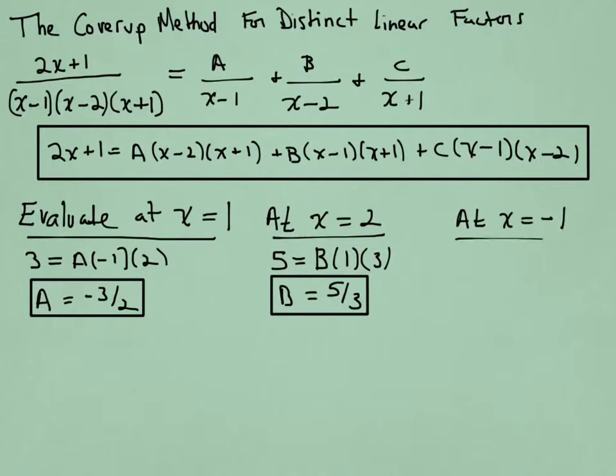To find C, I should evaluate at x equal to minus 1. Doing that makes this factor and this factor 0, and therefore will give me an equation involving only the unknown C. If I plug negative 1 onto the left, I get minus 2 plus 1, that gives me minus 1. And then I plug it into the right, the first two terms will be 0. This one I'll have C times minus 2, and then minus 3 here. Divide, and I'll get C is equal to 1 sixth.